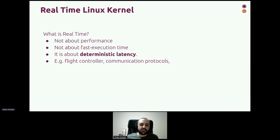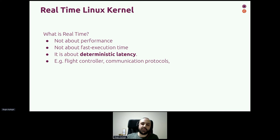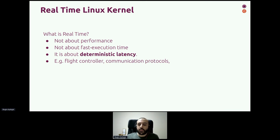So what does the real-time kernel provide? It's not about performance or fast execution time — it is about determinism. It provides you a deterministic latency so that you can be sure that certain activities will run within a specific period of time. It has many different use cases: it can be used in robotics for flight controllers, or for industrial automation communication protocols like Profinet and EtherCAT.